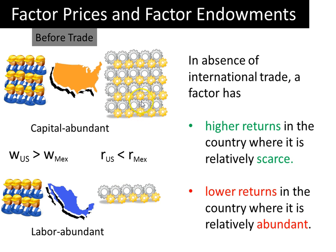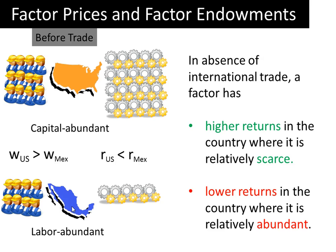The abundant factor doesn't make a lot of money. So in the U.S., capital doesn't get a lot of payment, and in Mexico, labor doesn't get a lot of payment, in comparison to the other country.